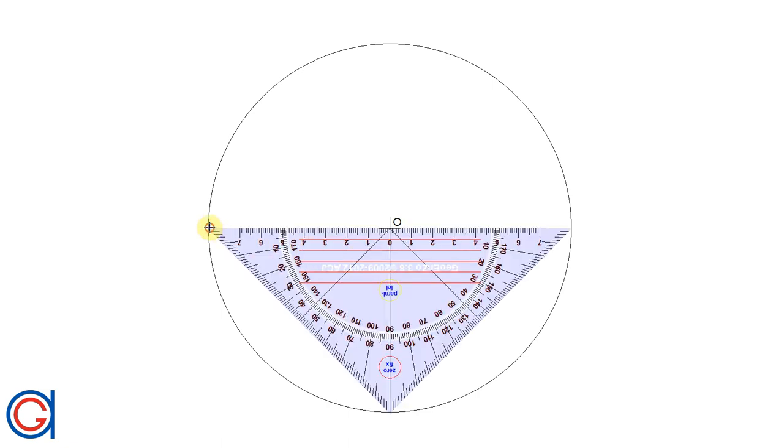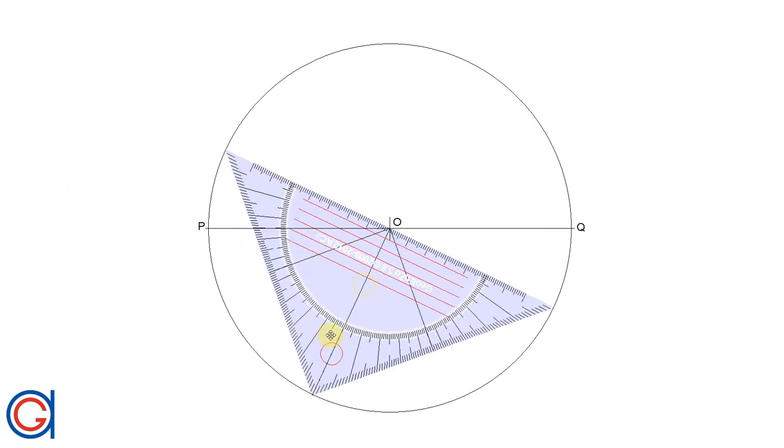Hello, today we are going to learn how to divide any circle into 14 equal parts. The first step is to draw a horizontal diameter which cuts our circumference at points P and Q as shown here in the video.